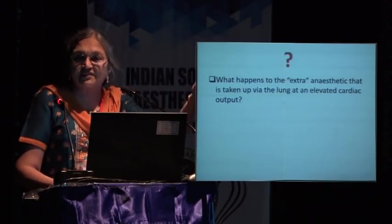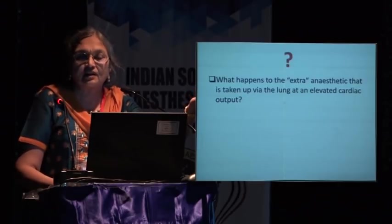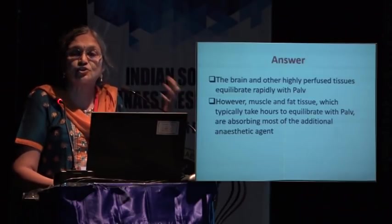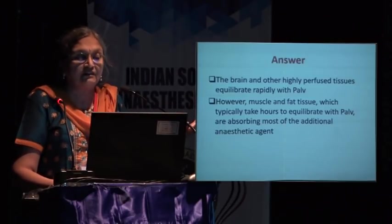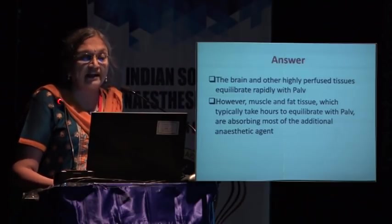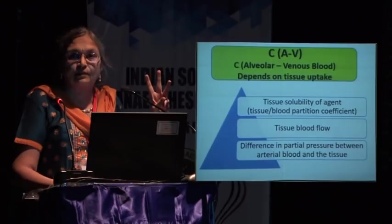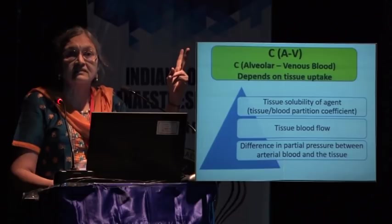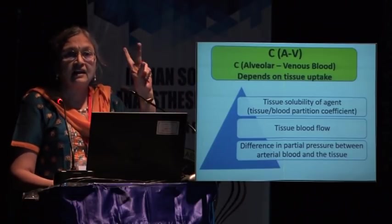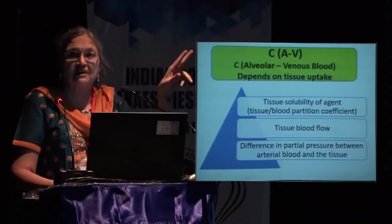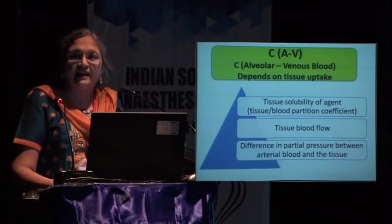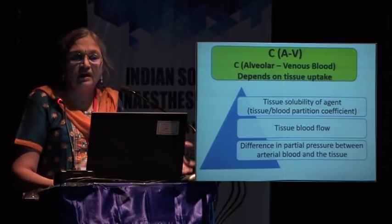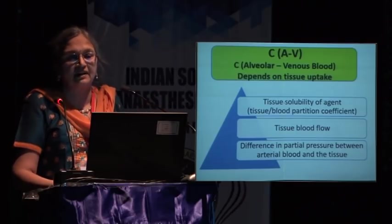The anesthetic that enters circulation redistributes to muscle and fat tissue, which take hours to equilibrate with the alveolar concentration and therefore absorb additional agent. The third factor affecting uptake is the alveolar-to-venous blood content difference, which depends on tissue solubility, tissue blood flow, and the partial pressure difference between arterial blood and the tissue.